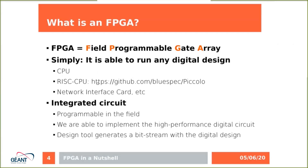So what is an FPGA? The FPGA is an acronym for Field Programmable Gate Array. Simply put, the FPGA is a digital circuit where you are able to run any digital design, like a standard CPU, a RISC CPU, or in our case, a network interface card. But this list is not complete — you can run any digital circuit you can think of.